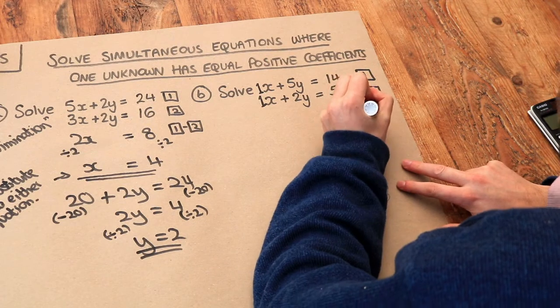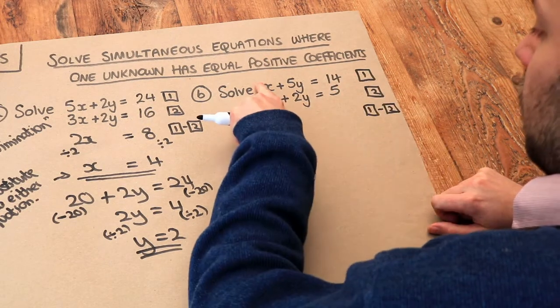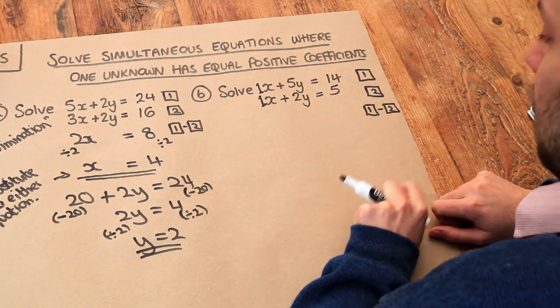So again we're going to do equation 1 minus equation 2. So we do this minus this. x minus x is just nothing, it just disappears.